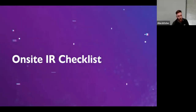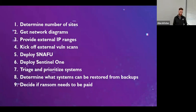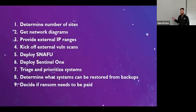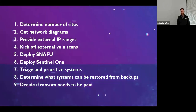Here's our on-site IR checklist. First thing I do is ask for network diagrams — I want to know the number of sites and all possible ingress points. Customers usually know their primary site, but I also care about every network location, so I start drawing on a whiteboard or paper and getting IP ranges. A lot of people forget about their Texas office or North Carolina branch. That's where the DNS Dumpster hunting really helps, and I'll kick off external bone scans with any new IP ranges.